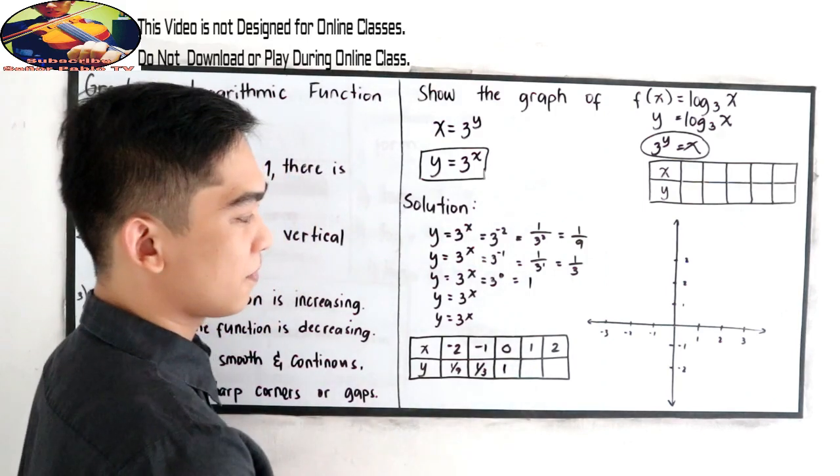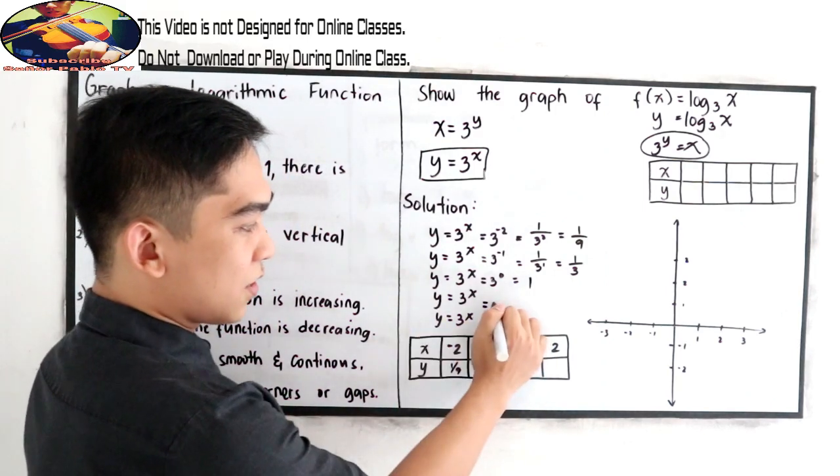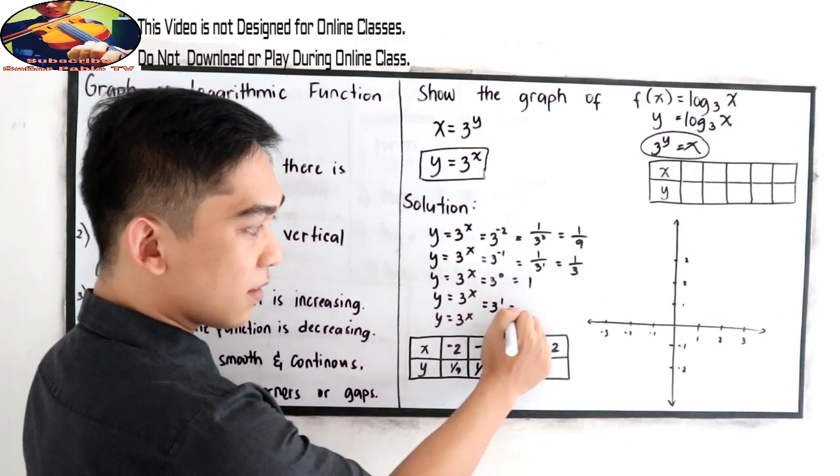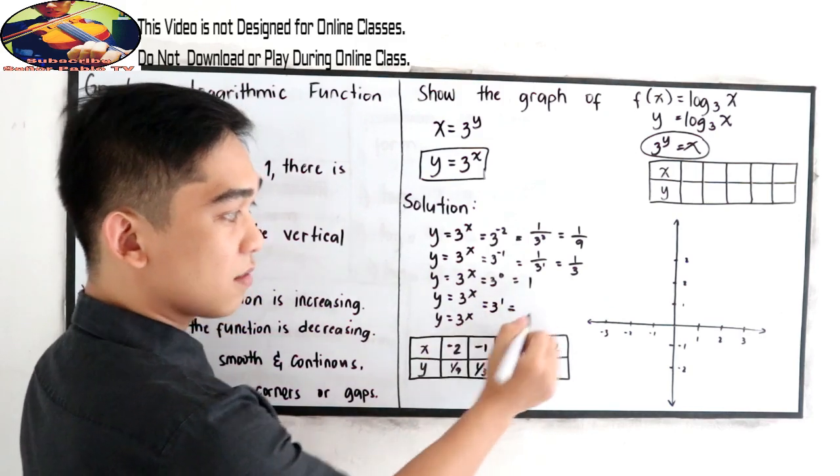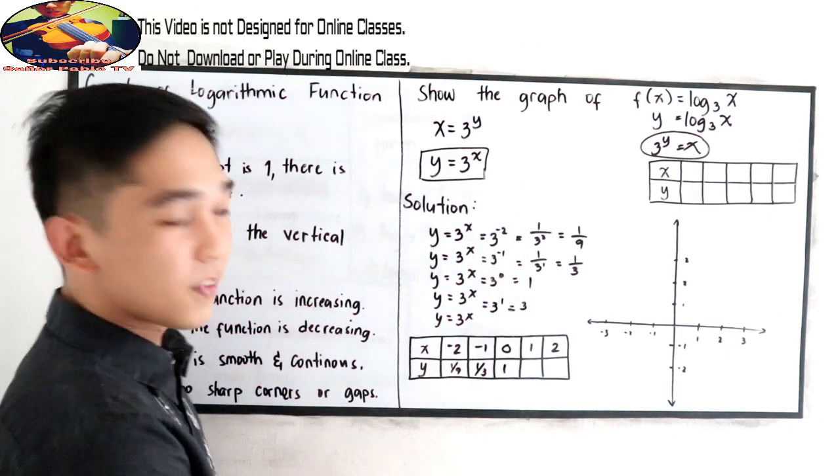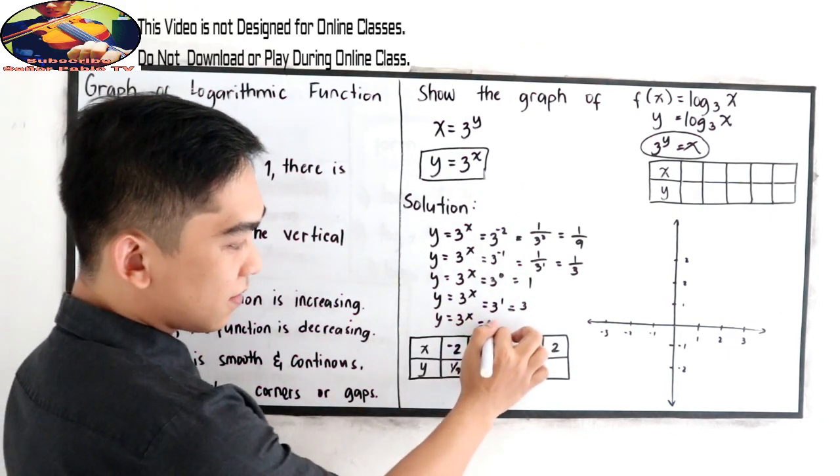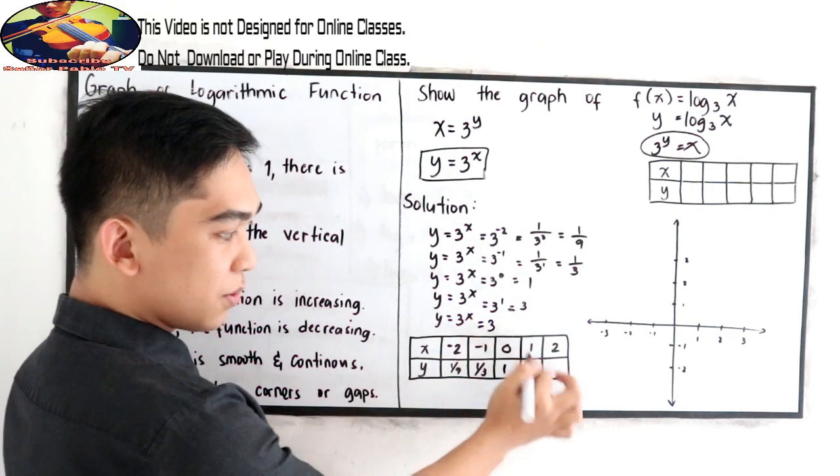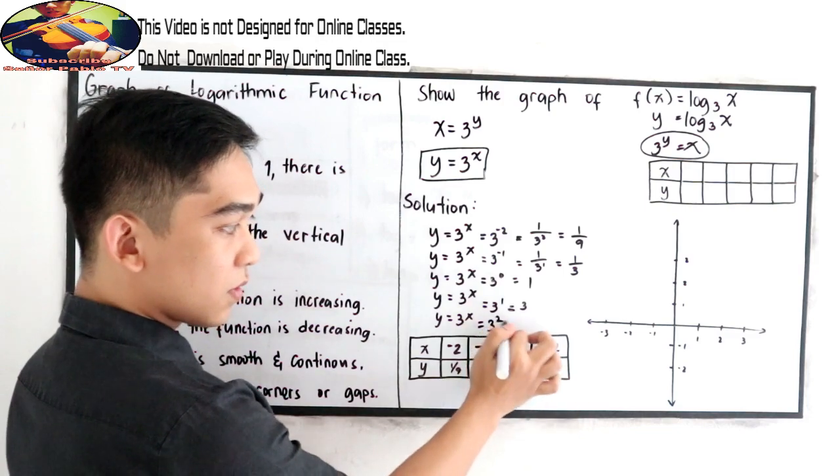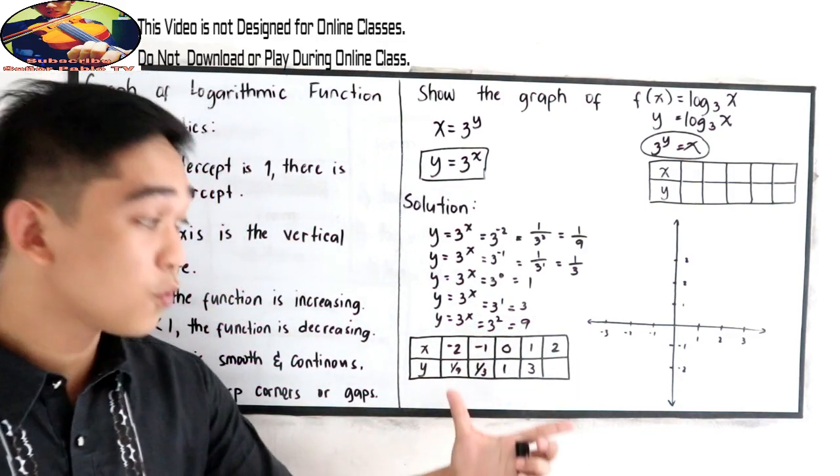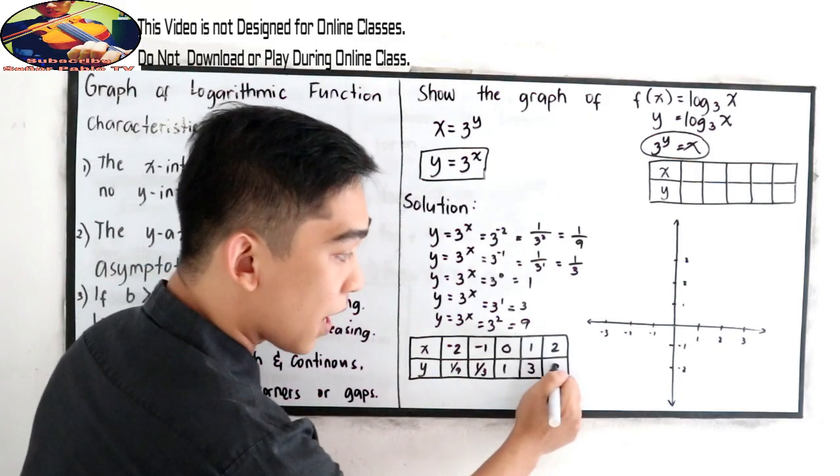3 raised to 1, if x is 1, that is 3. And if x is 2, 3 times 3, this is 9. So this will be our table of values.